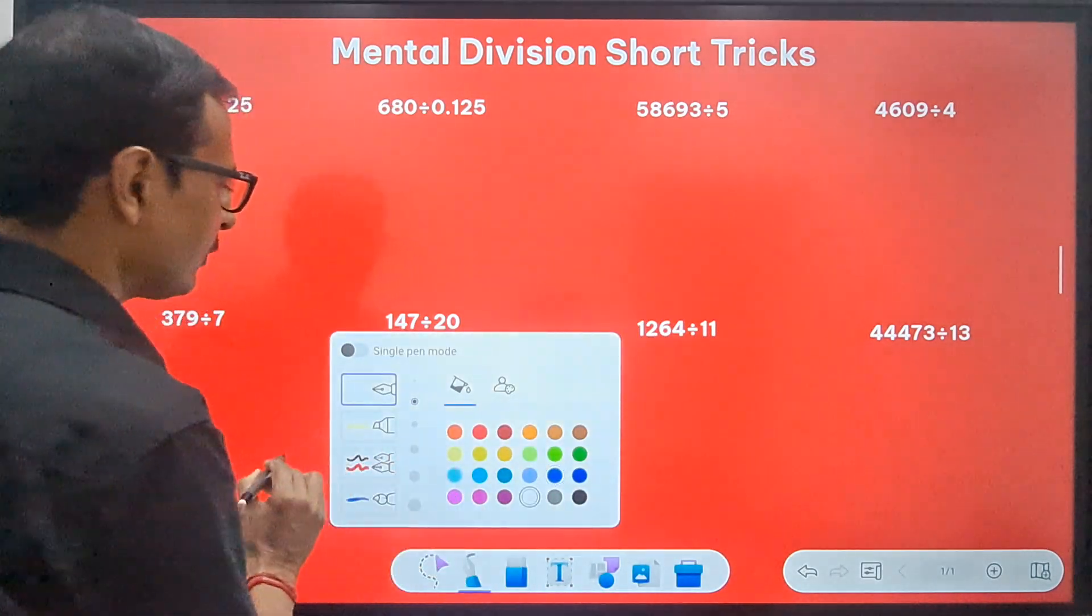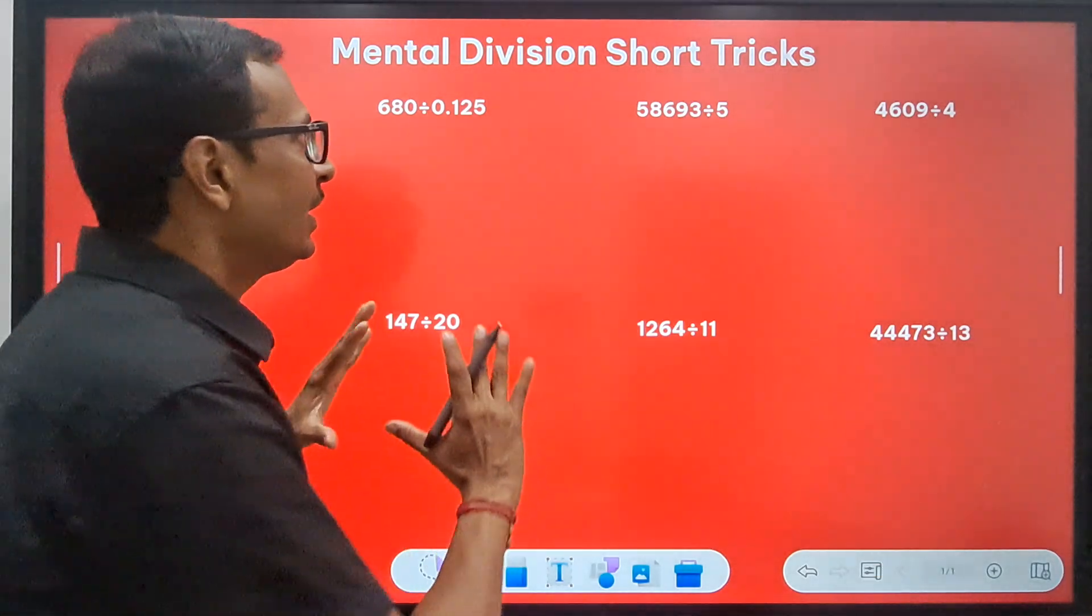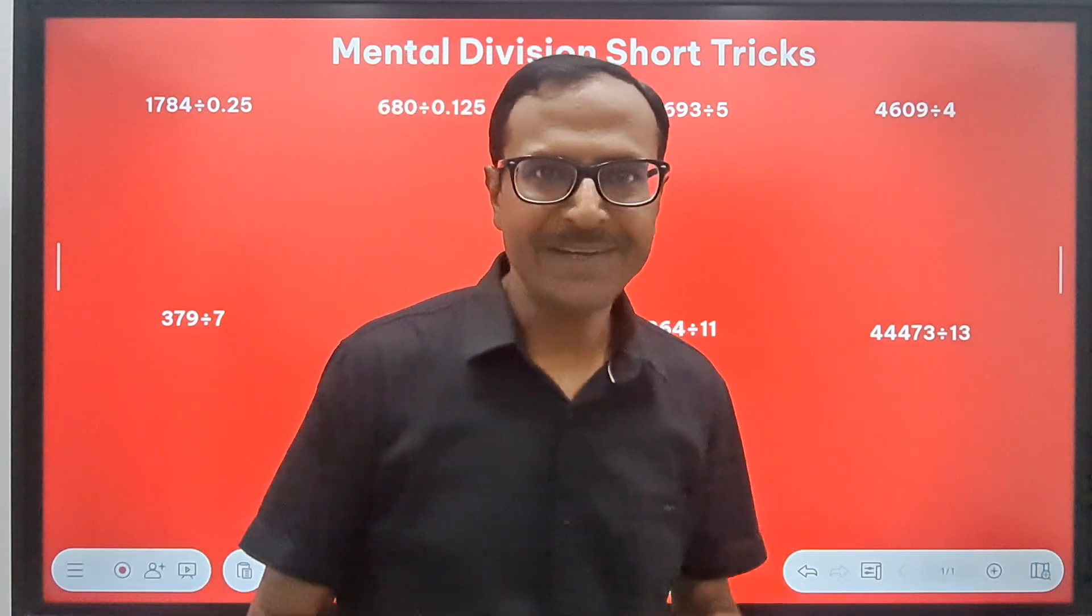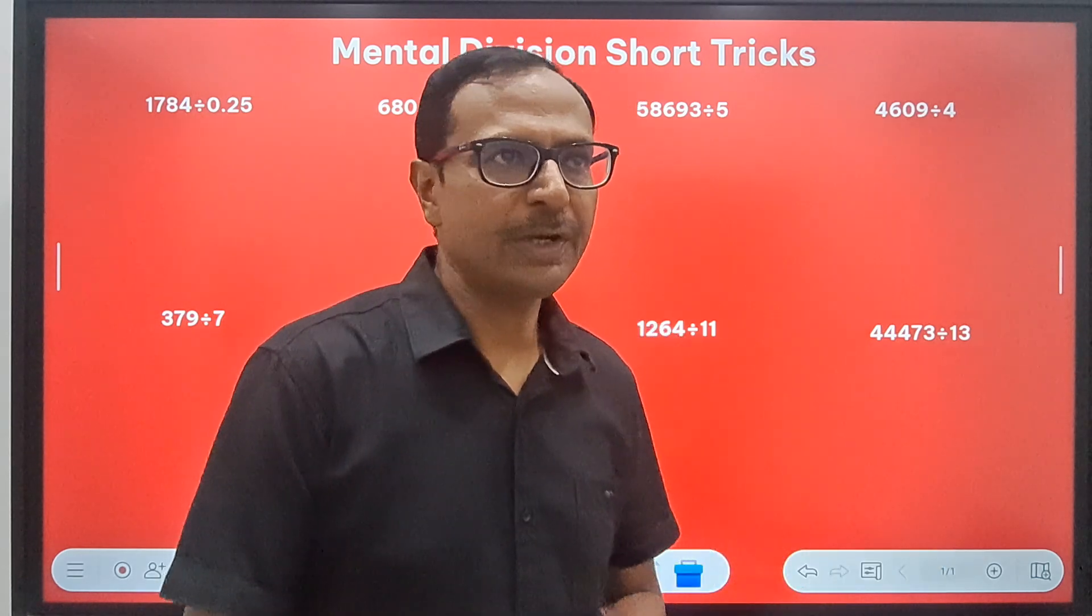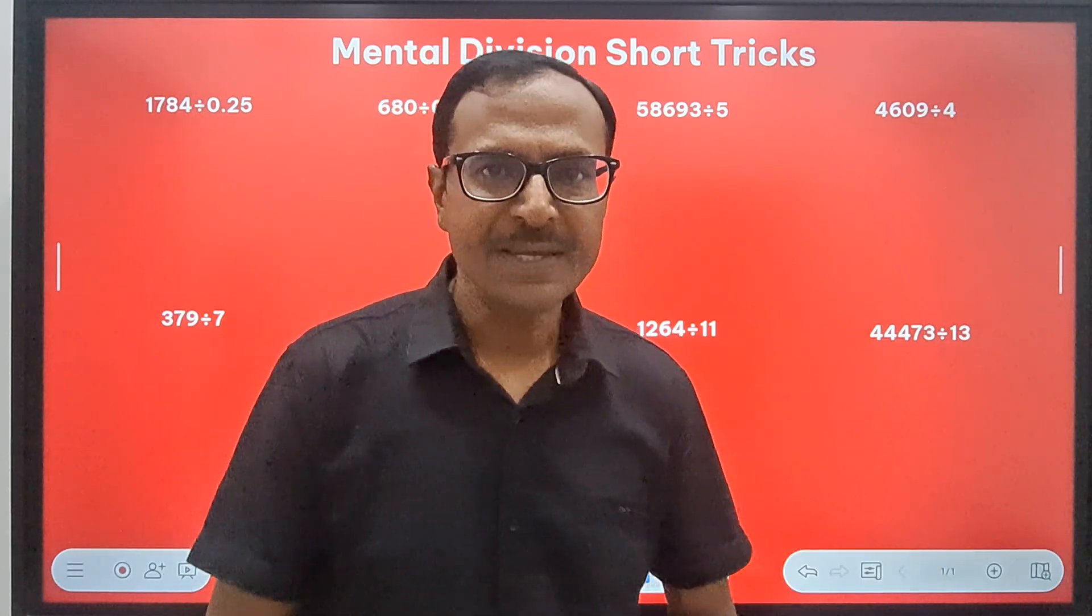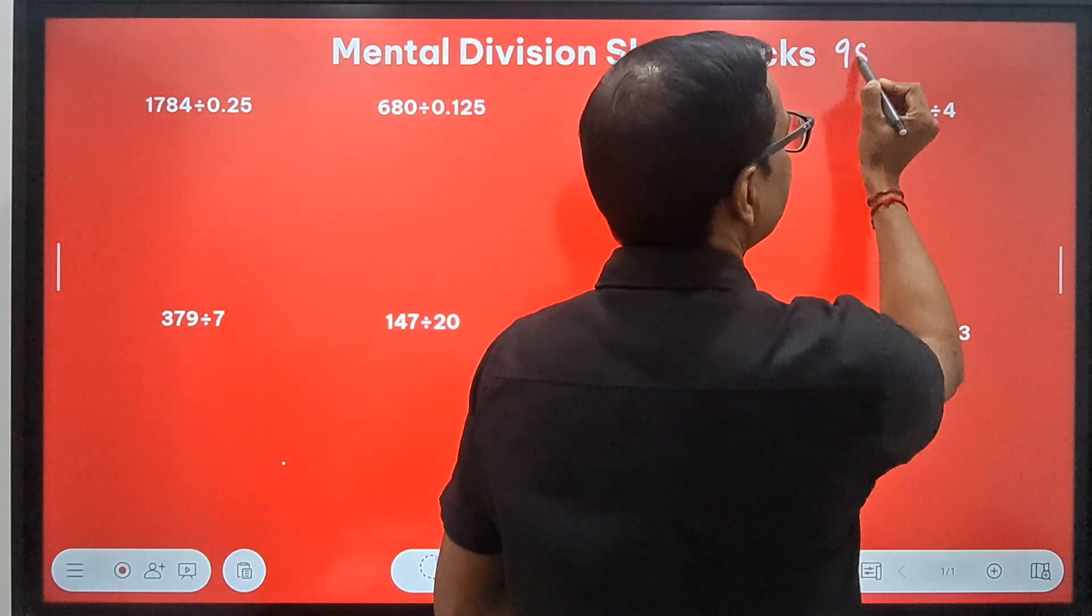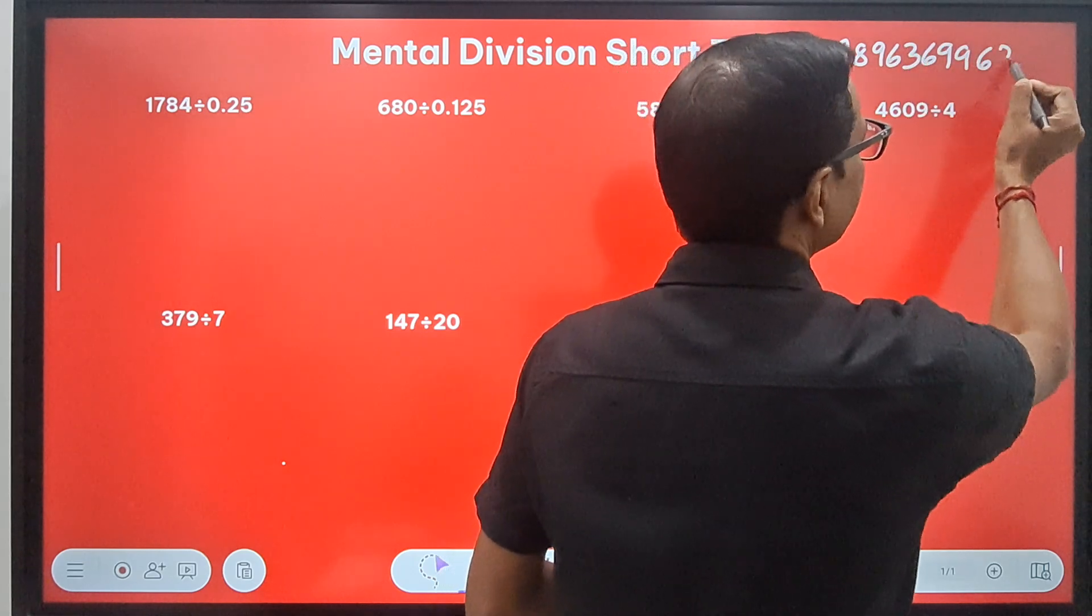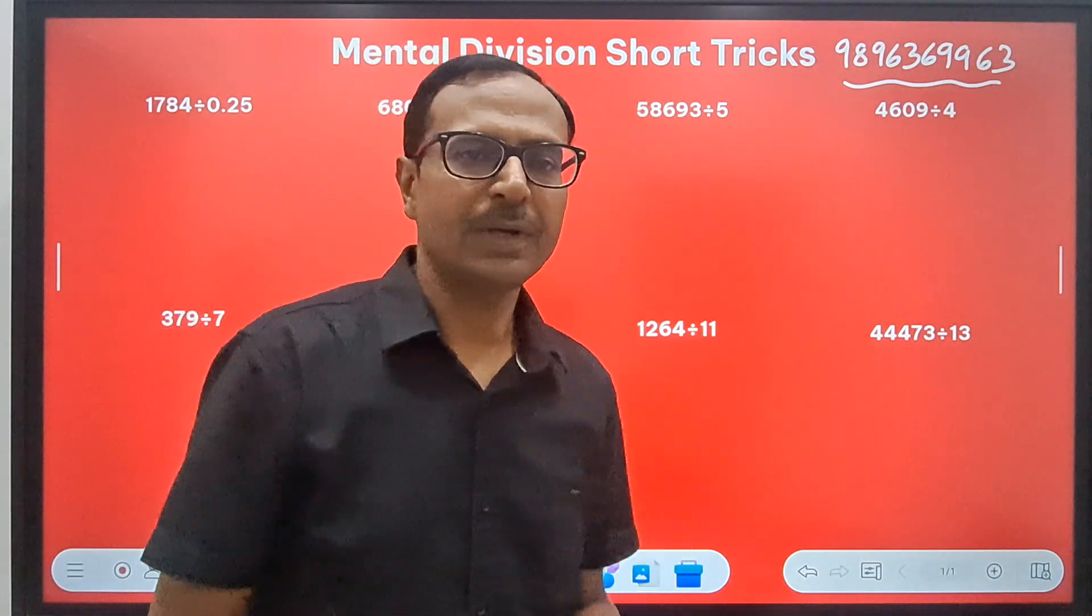You can see here I've written eight different problems which can be solved mentally, and I'm going to demonstrate how the use of smart tricks helps in solving them. There's a huge compilation of short tricks scattered around, so if you want a compiled form in ebook format with video links, send me a message on WhatsApp at 9896369963 to learn about the combo of short tricks and reasoning puzzle course.